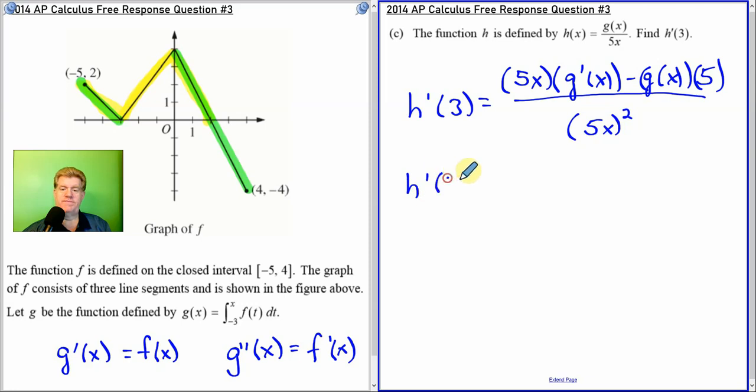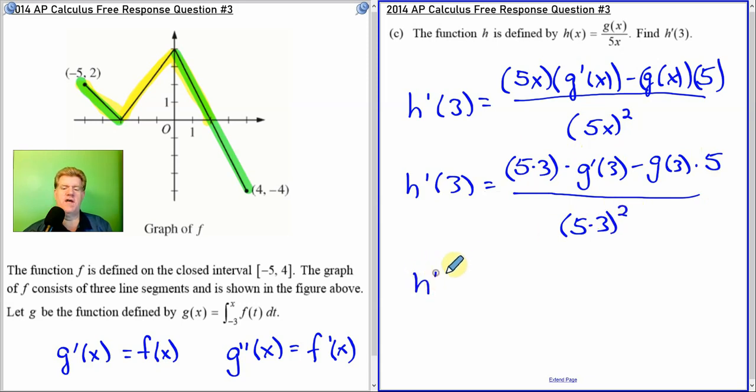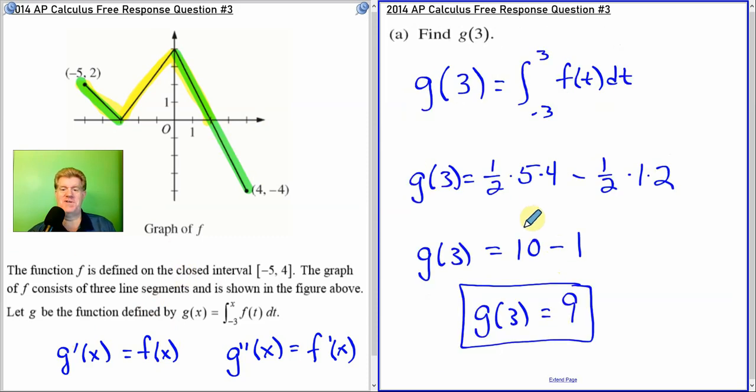Now we just plug in 3. So 5 times 3 times g'(3) minus g(3) times 5, all over 5 times 3 squared. All right. Let's put some values in now. 5 times 3 is 15. g'(3). Remember g'(3) would be the same as f(3). So g'(3) would be the same as f(3). And what's f(3)? Well if you look at 3, it's down here, negative 2. Minus g(3). Well g(3), you know what? We already figured it out. g(3) is 9.